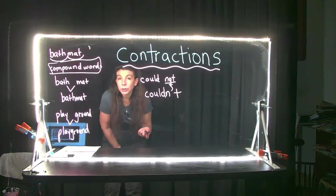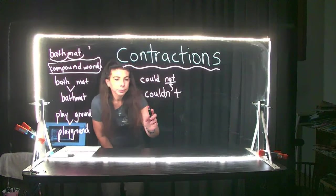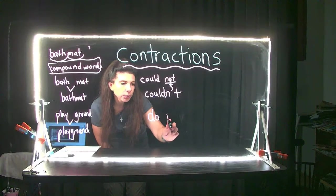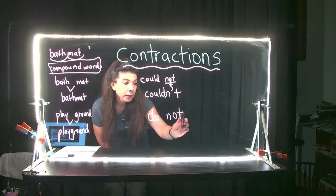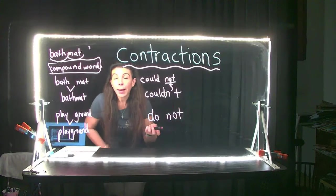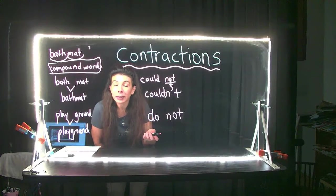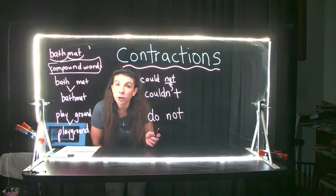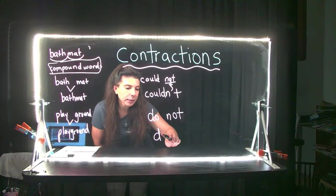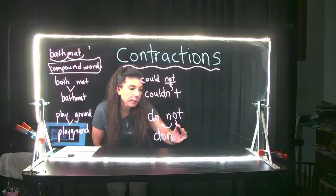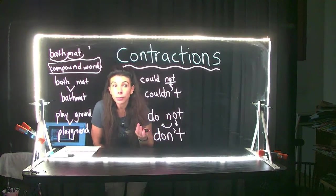Same thing with the word 'don't.' Do not touch a hot stove — you would probably say 'don't touch the hot stove.' How do I make that contraction? The 'do' stays the same, the N goes over, the O becomes the apostrophe, and then you have the T. Don't.